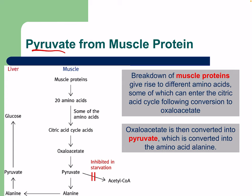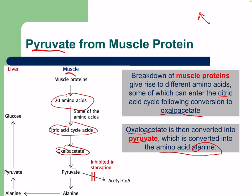Breakdown of muscle proteins gives rise to different amino acids, some of which enter the citric acid cycle following conversion to oxaloacetate. Oxaloacetate is then converted to pyruvate, which is converted to the amino acid alanine. The 20 amino acids from muscle breakdown — some entering the citric acid cycle as oxaloacetate, then becoming pyruvate — are inhibited from entering acetyl-CoA during starvation, so instead they become alanine, which then becomes pyruvate to create glucose prioritized for the brain.